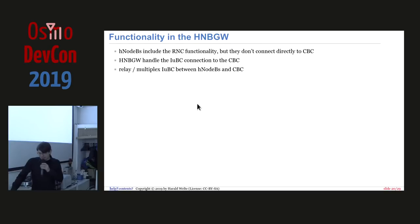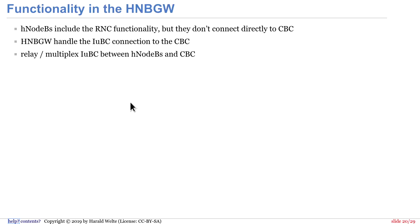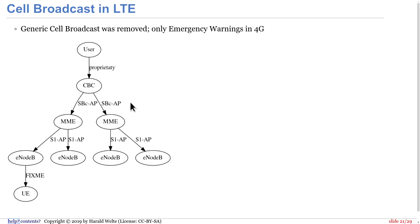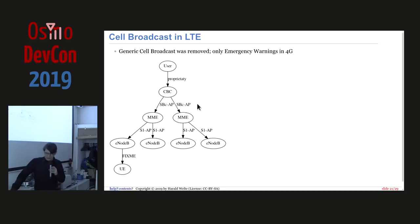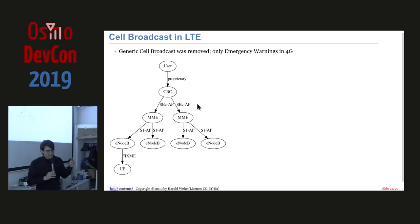For IuH-based interfaces with an HNB gateway — for femtocells — the situation is the same from the CBC's perspective. You use the Iu-BC protocol, but talk to the Home Node B gateway, which distributes messages to the individual Home Node Bs. In 4G, the external user again talks to the CBC over a proprietary protocol. The CBC then uses a new SBC-AP protocol over the SBC interface to talk to the MME, which distributes over S1 to the eNodeB. Messages are carried in system information blocks broadcast by LTE.